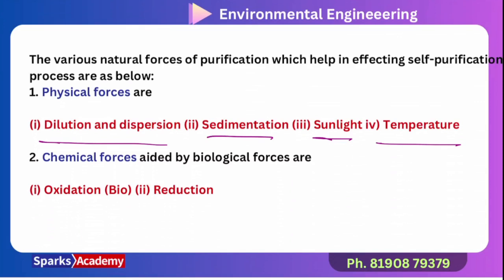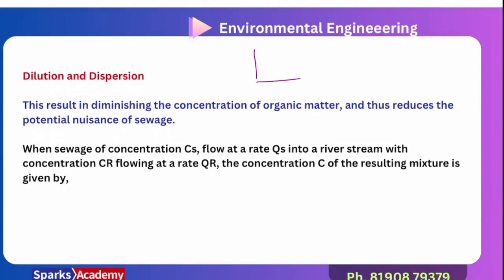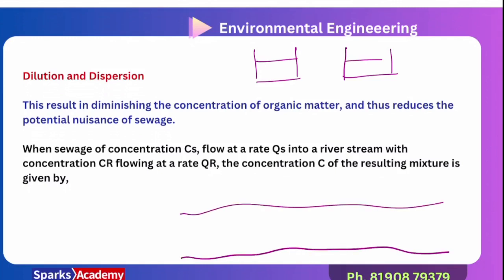So what is dilution and dispersion? For example, 1 gram of sugar in 1 glass of water — that is the mineral. In dilution and dispersion, a huge quantity of river flow receives a small quantity of sewage discharge. Obviously the concentration becomes minimal — this is what the dilution and dispersion term represents.